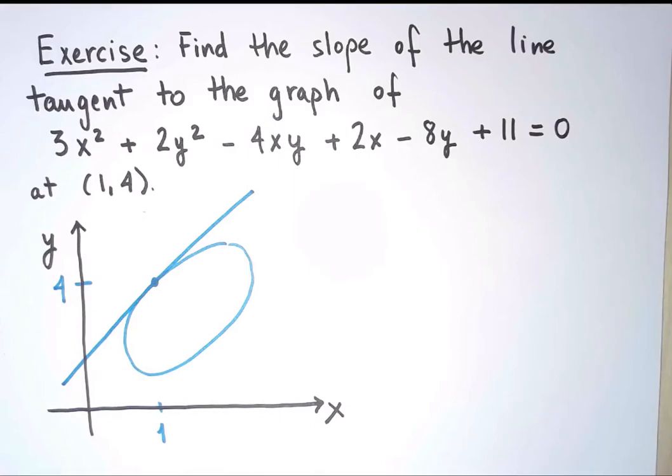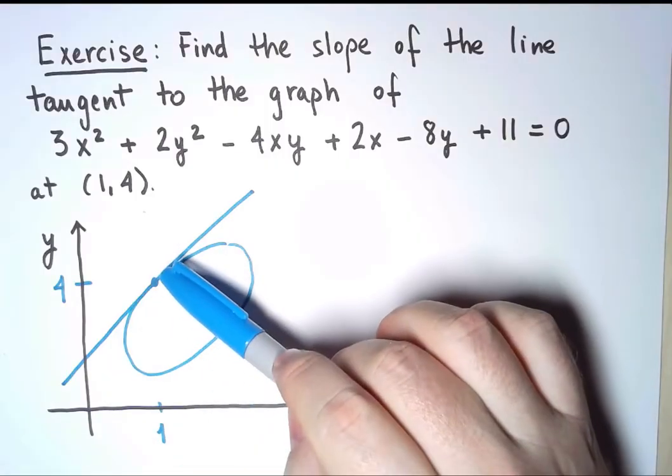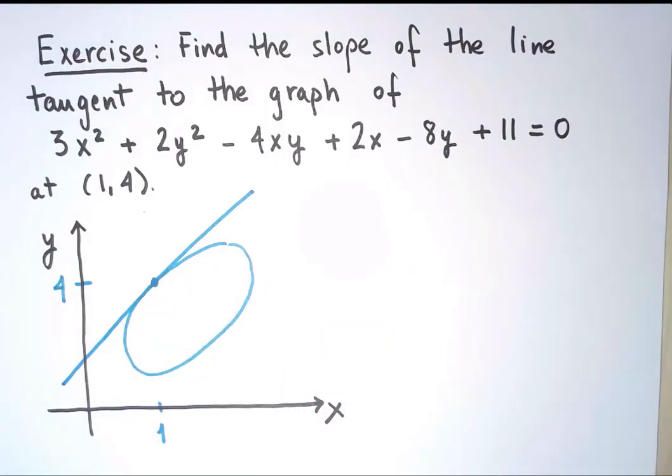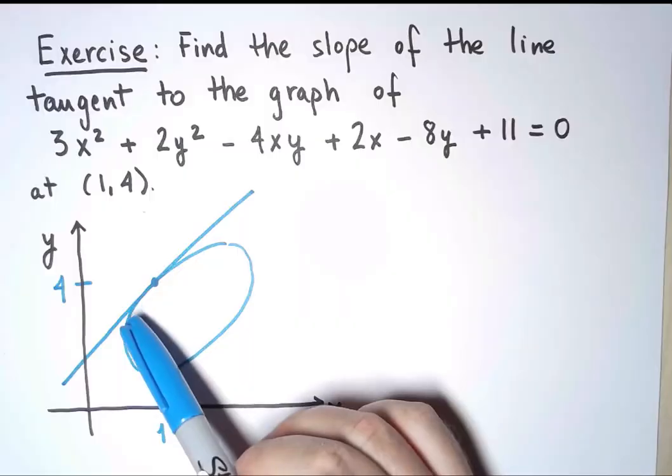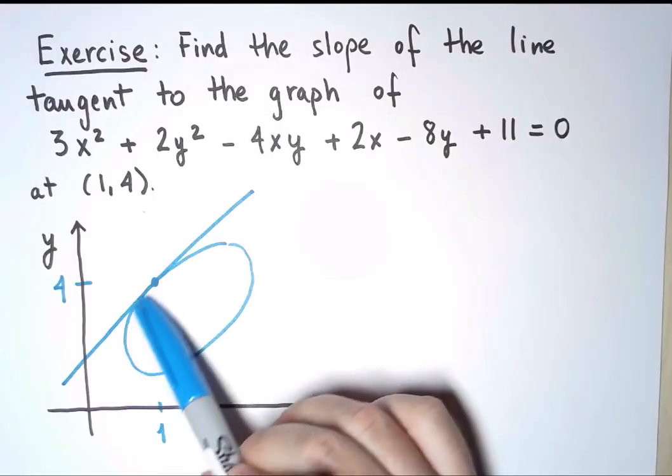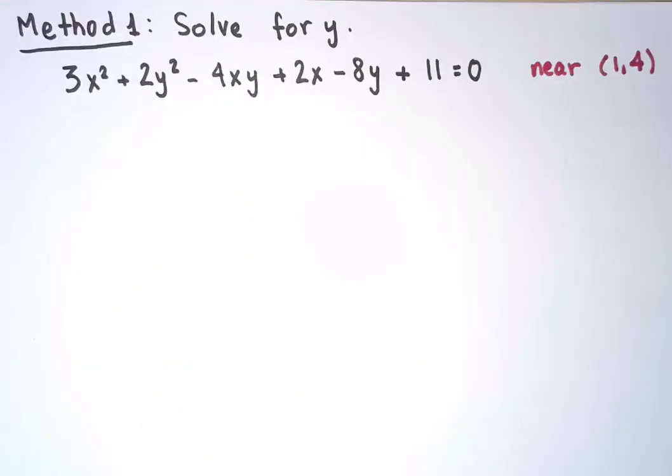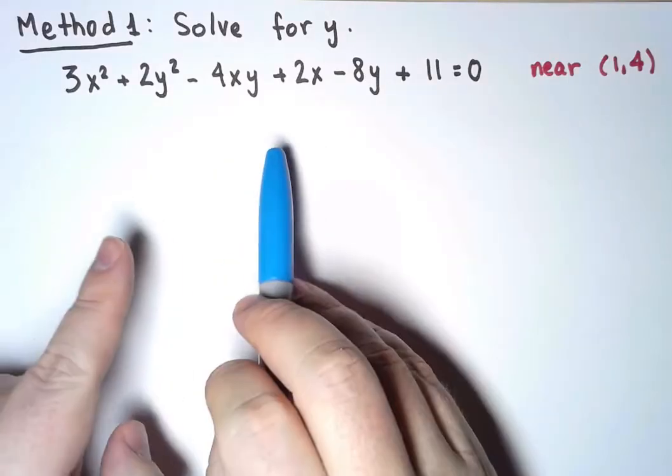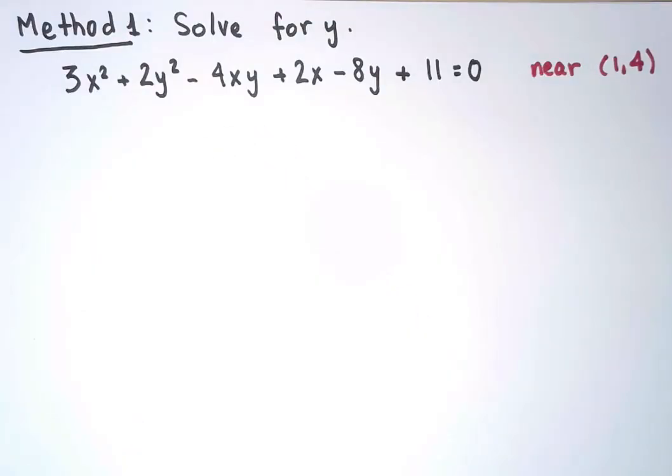The first method to do this is going to be to try to solve explicitly for y. Again, noticing that this is not y as a function of x, so I will get something multivalued. But I only care about what happens near the point (1,4). I want to solve for y here, and this looks a little bit messy. But if I think of y as the unknown, this is just a quadratic equation.